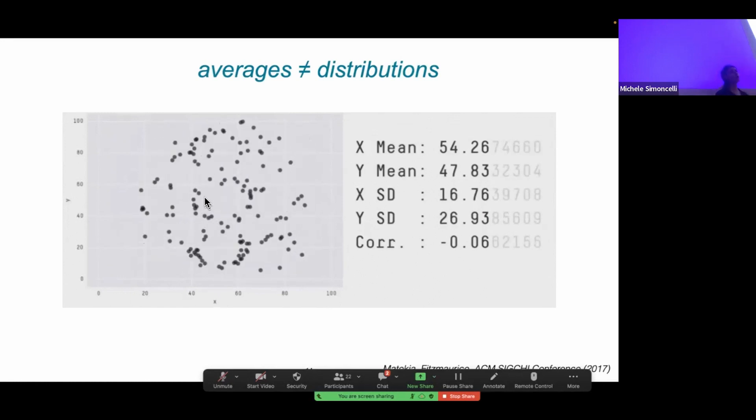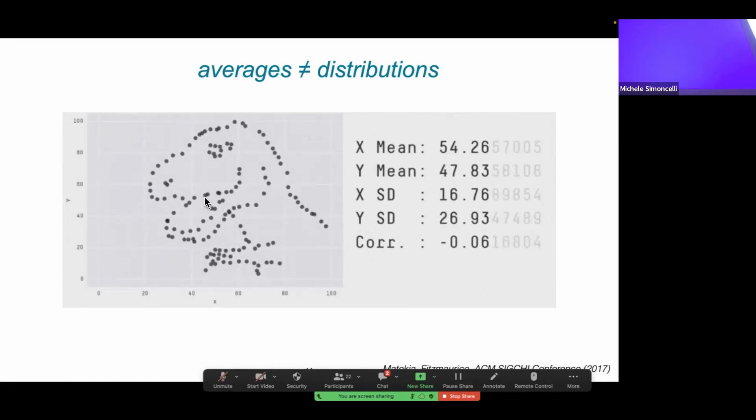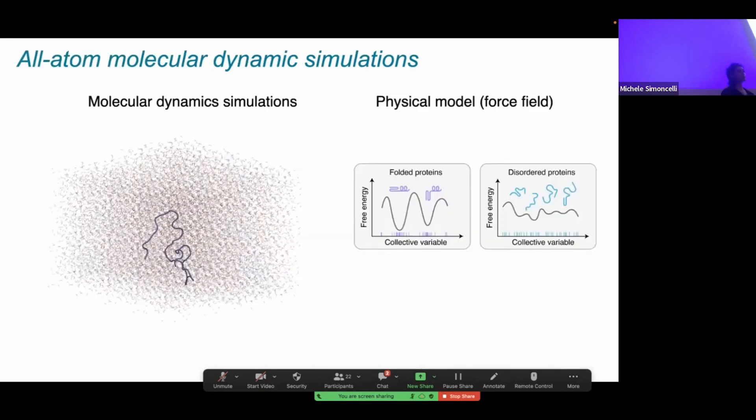We wondered, could this be what was going on with amyloid beta? Is it possible that the average behavior is very similar, but the distributions of the intrinsically disordered protein were somehow changing in the presence of the small molecule? To address that question, we performed all atom molecular dynamics simulations. Something that's challenging about intrinsically disordered proteins in contrast to folded proteins is that for a folded protein, you have a really well-defined free energy landscape with one or two very well-defined free energy minima. A disordered protein, your free energy landscape is much more rugged and much more shallow. It's a much more challenging problem because you have to get many more minima correct.